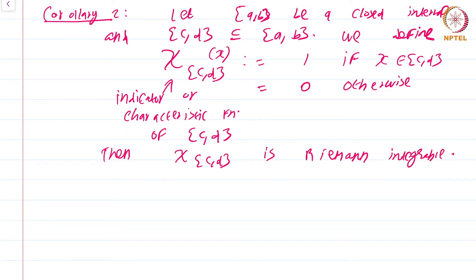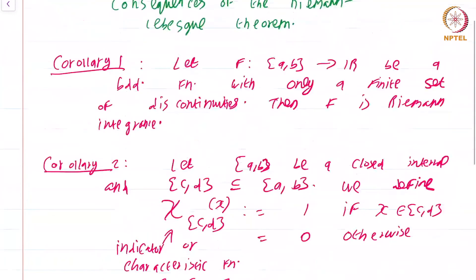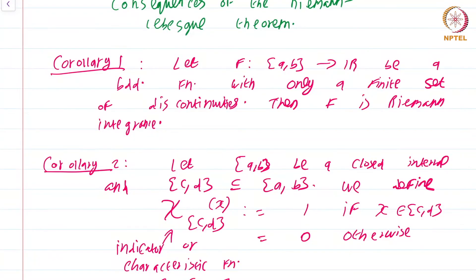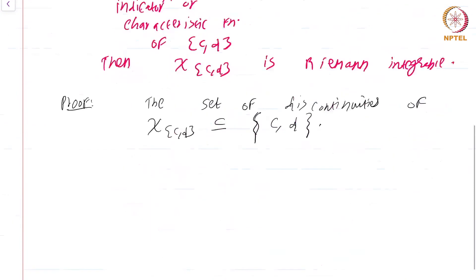Now the proof of this is just one line. The set of discontinuities of chi_[c,d] is a subset of these two points {c, d}. Just these two points are the only possible places where this function can be discontinuous, so it follows from the previous thing that any bounded function with only a finite set of discontinuities is automatically Riemann integrable.